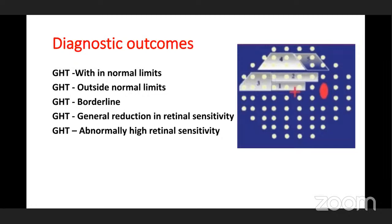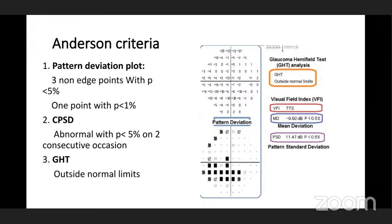Then we have the Anderson criteria, which has three components: pattern deviation plot, CPSD, and GHT. In the pattern deviation plot — excluding edge borders — three points with p-value less than 5% and one point with p-value less than 1%; CPSD with p-value less than 5%; and GHT outside normal limits. These together constitute the Anderson criteria.